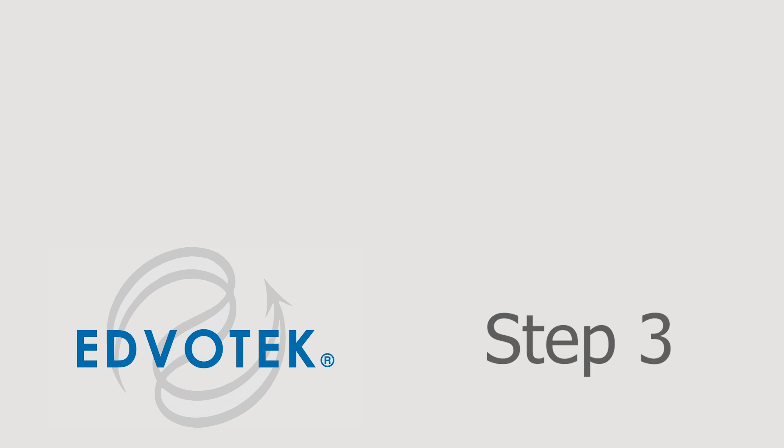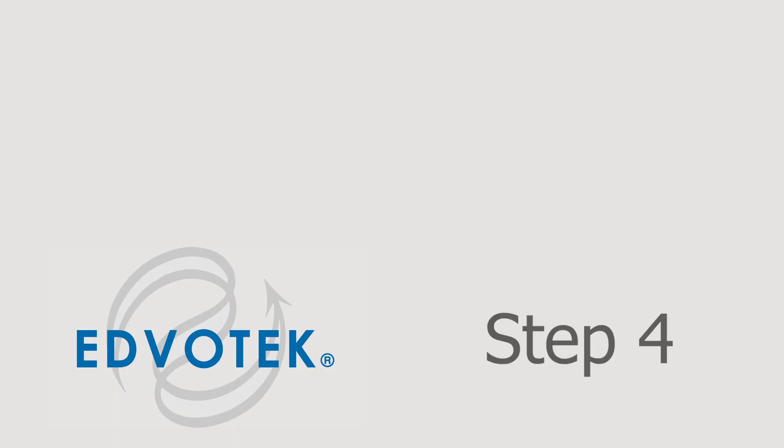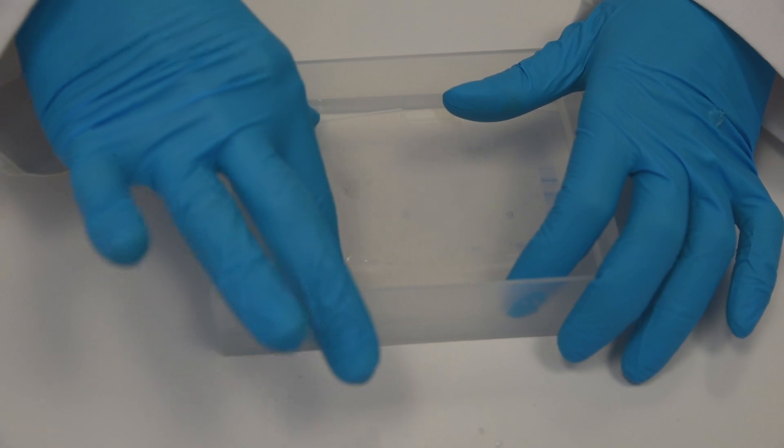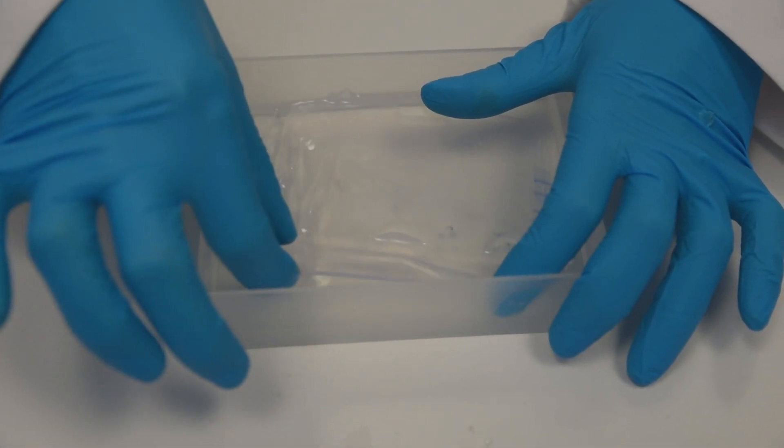Step 3: Add approximately 100 ml of the staining-destaining solution to the tray containing the gel and back plate. Use enough solution to just cover the gel. Step 4: Carefully remove the back plate from the tray, leaving just the gel in the staining solution.